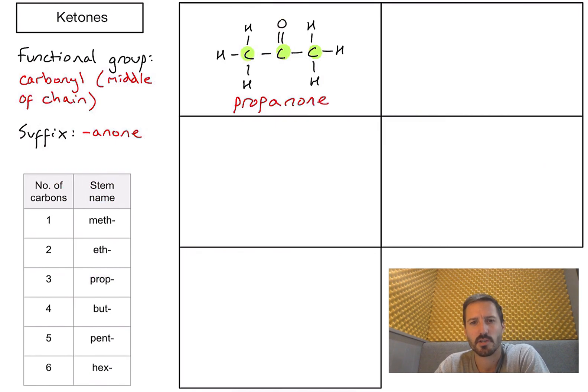And why do I not need to put propan-2-one? Why don't I need a number to indicate where that carbonyl functional group is? Well, there's actually only one position where that carbonyl could be to make it a ketone and that's on my middle carbon or the second carbon. So you could put propan-2-one, but actually technically we don't need that number.